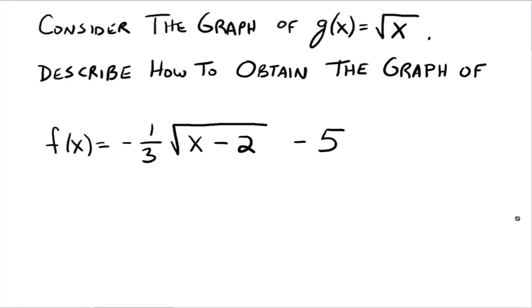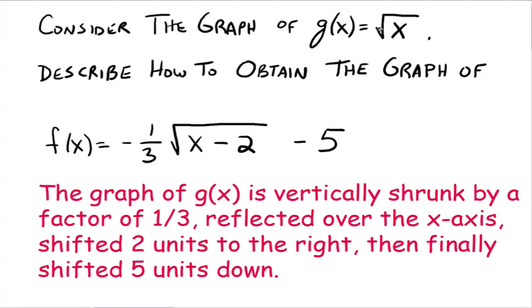Now, there is an order that it needs to be kind of stated, and it's as follows. The graph of g, which is this one up here, is vertically shrunk by a factor of a third. It's reflected over the x-axis. It's shifted 2 units to the right. And then, after we do all that, then we finally take the graph and shift it 5 units down.